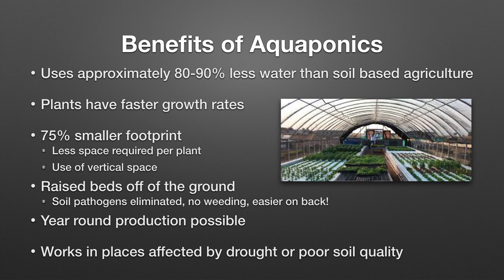We can also utilize vertical space in a greenhouse or indoor production facility. Beds are raised off the ground, which eliminates pathogens we typically associate with soil. There's no weeding, and it's a lot easier on the workers — the systems can be built up to waist level. We can have year-round production in tropical environments and, moving into temperate environments, in greenhouses or indoor buildings. It also works in places with poor soil quality or drought where water is really limited.